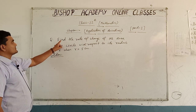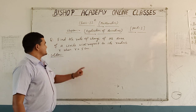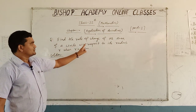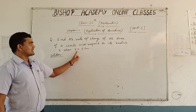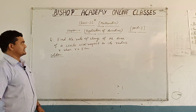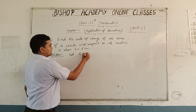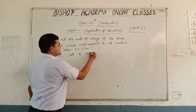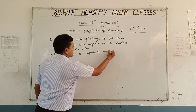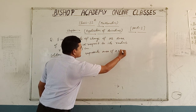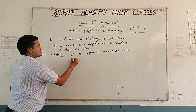Question: Find the rate of change of the area of a circle with respect to its radius r when r equals 5 cm. Let capital A represent the area of a circle.